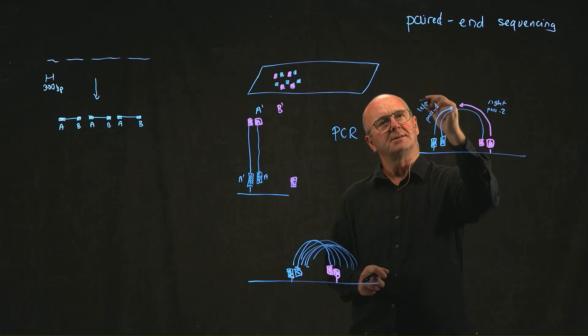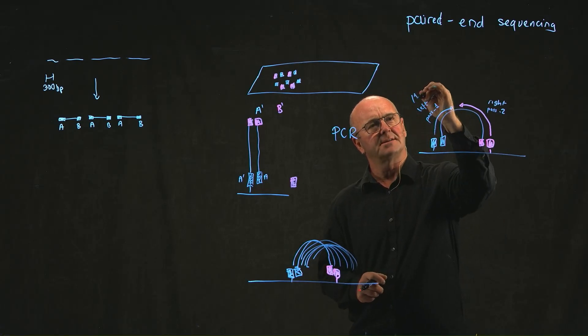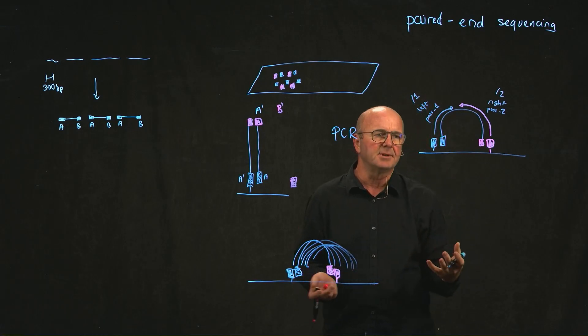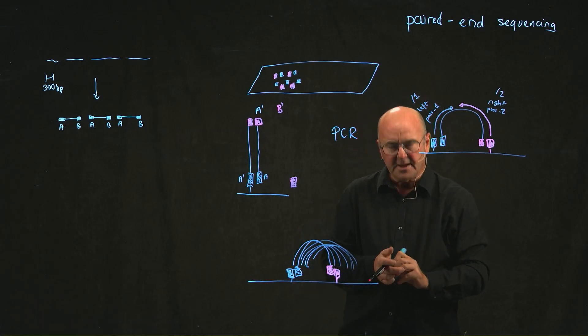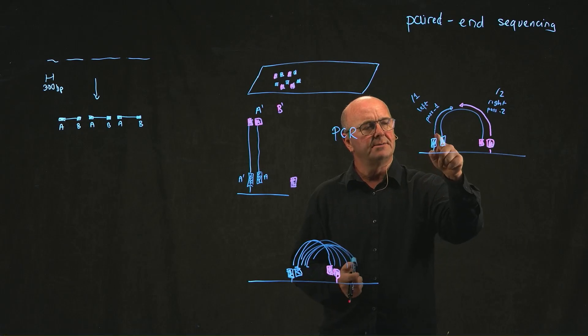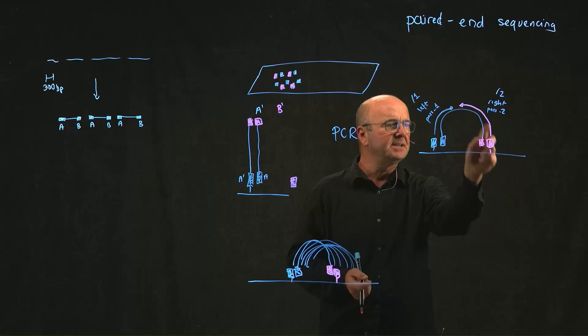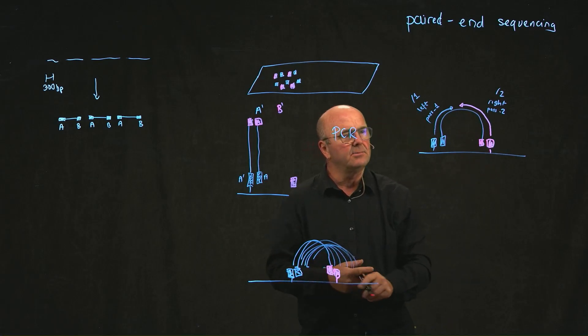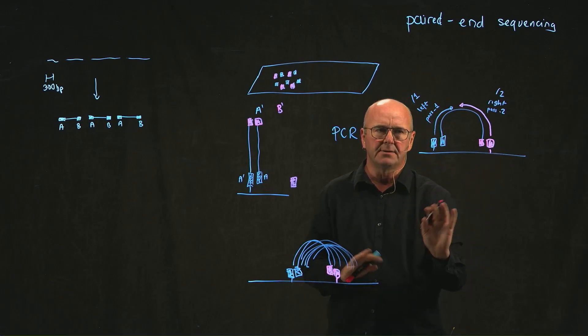Reads the end slash one, and these are often called reads the end slash two. There's lots of ways that you can name them, it doesn't really matter. The point is that you know that this sequence here and this sequence here came from the same piece of DNA.